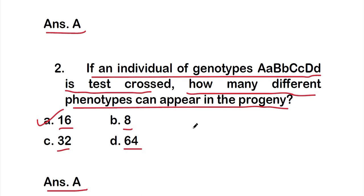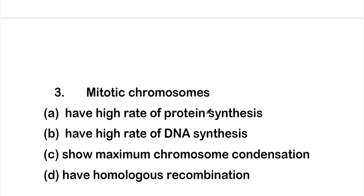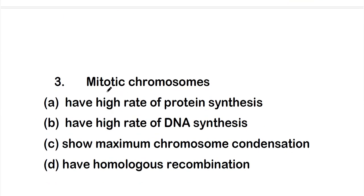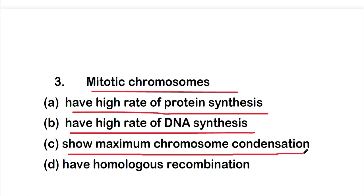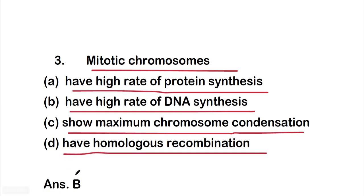Question three: mitotic chromosomes — option A: have high rate of protein synthesis, option B: have high rate of DNA synthesis, option C: show maximum chromosome condensation, or option D: have homologous recombination. The right answer is option C, that is mitotic chromosomes show maximum chromosome condensation.